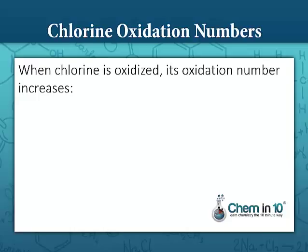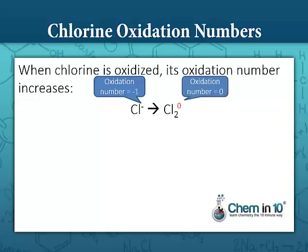When chlorine is oxidized, that means its oxidation number increases. Here we have a chloride ion, which has an oxidation number of negative one — that's the charge of the ion. It is becoming oxidized because its oxidation number is increasing to zero. Since chlorine gas is its natural state, it has an oxidation number of zero, so its oxidation number is increasing. So we say chlorine is oxidized.